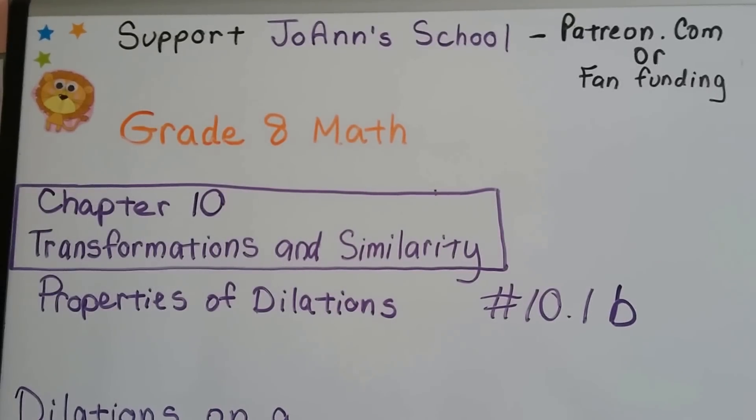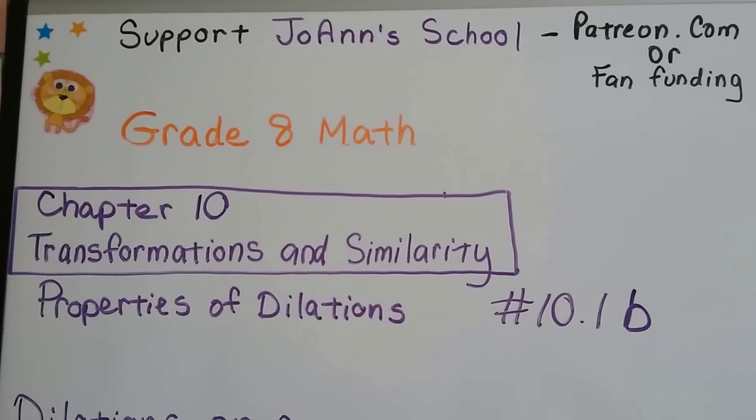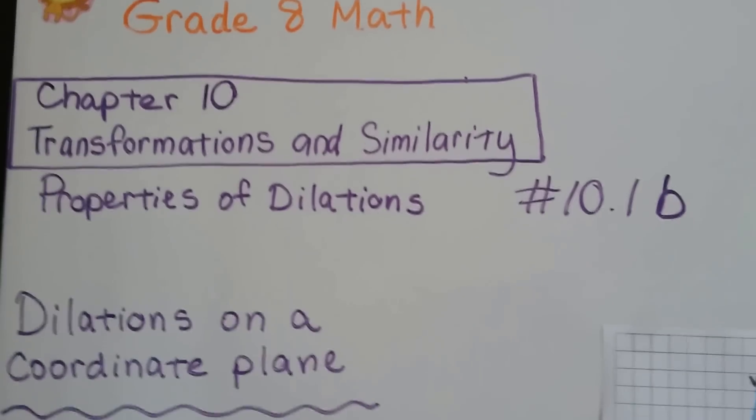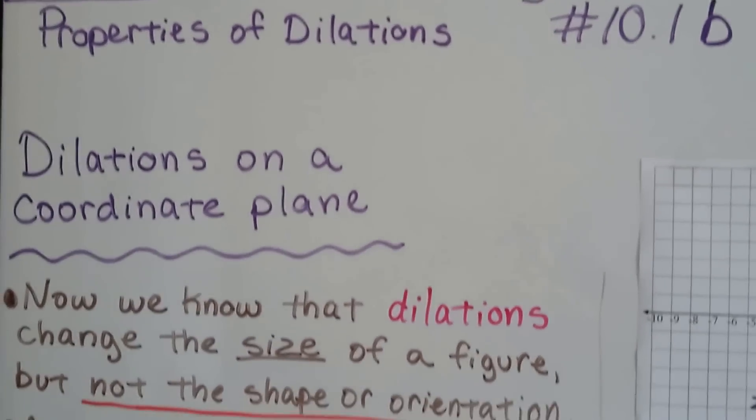Grade 8 math number 10.1b, properties of dilations for chapter 10. This is dilations on a coordinate plane.